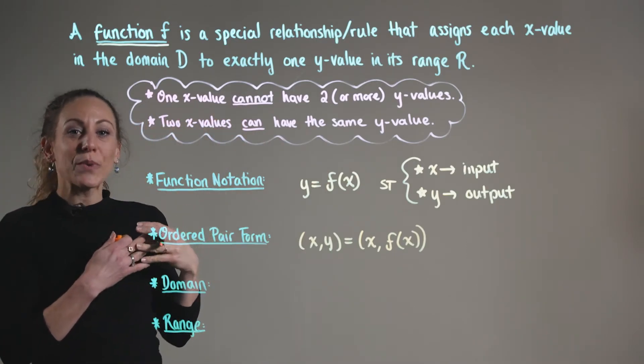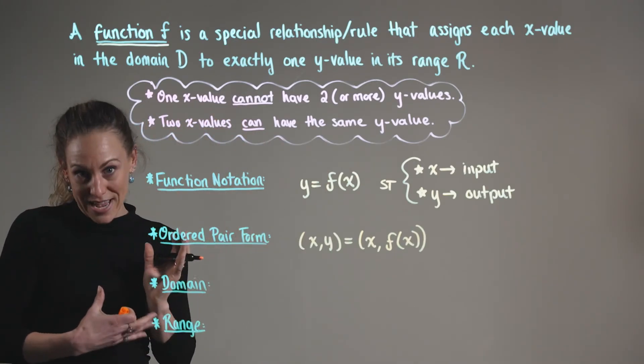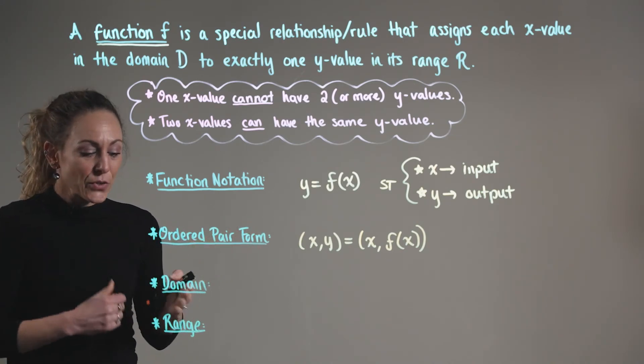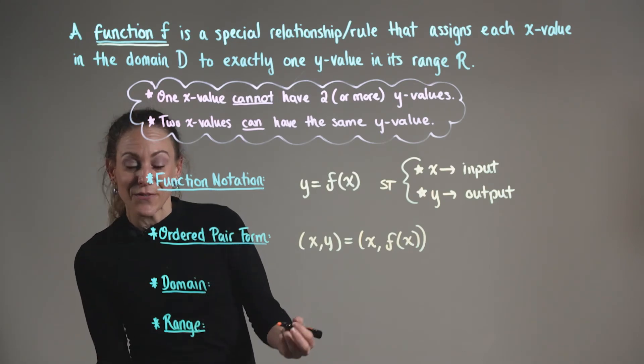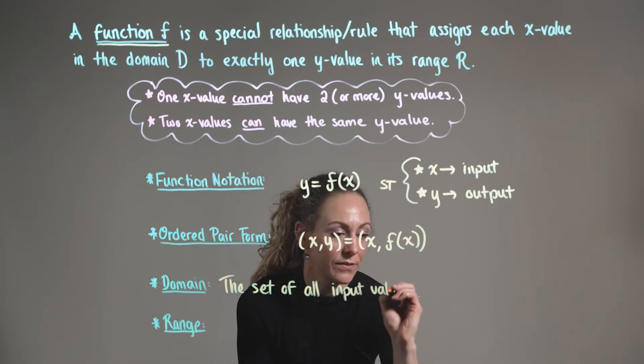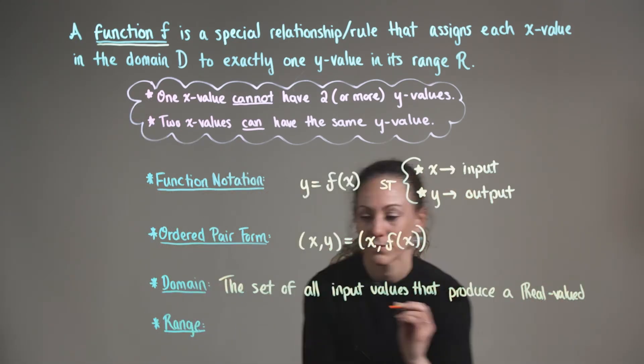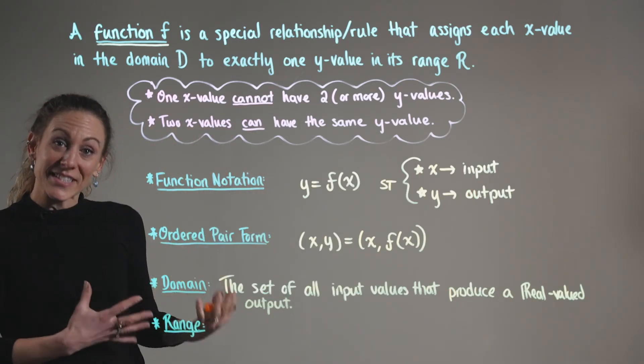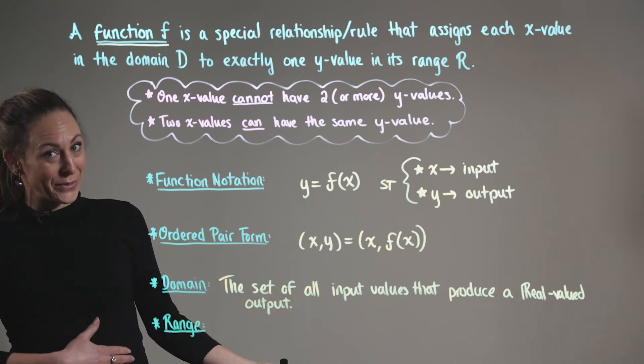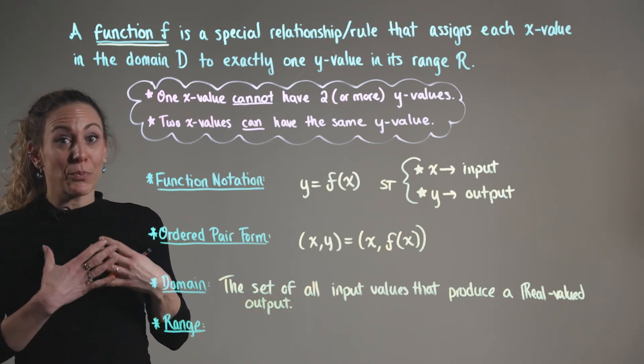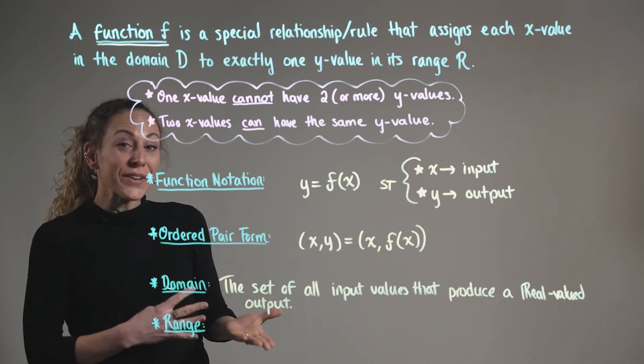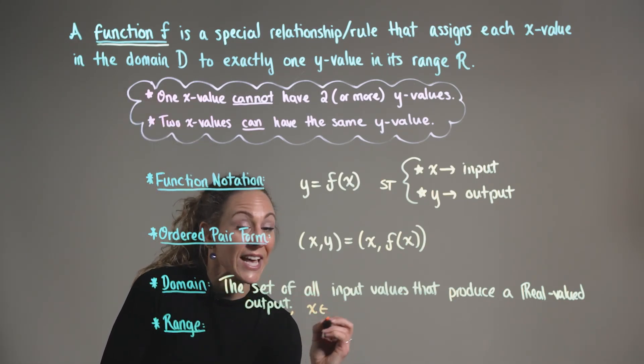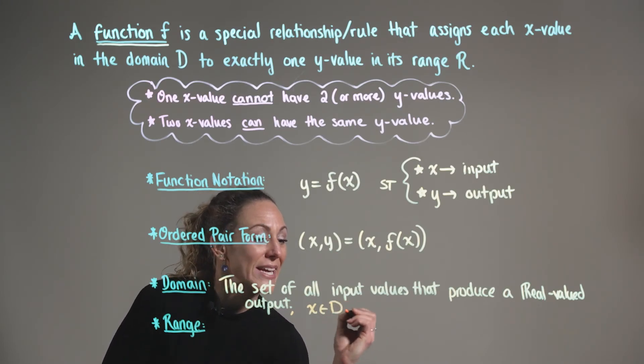In the definition we mentioned the function's domain and range, but what exactly are these values? The domain is the set of all input values, aka x-values, that are producing a real-valued output. For the domain, we say that x is an element of our domain D.